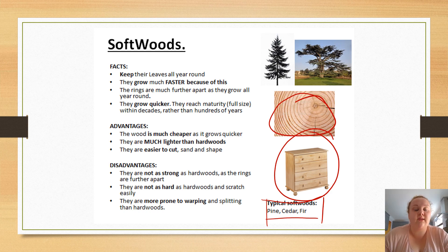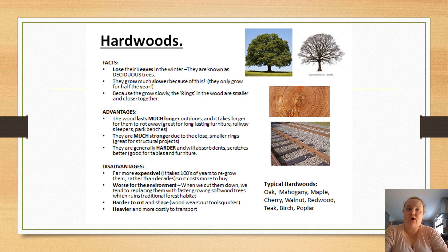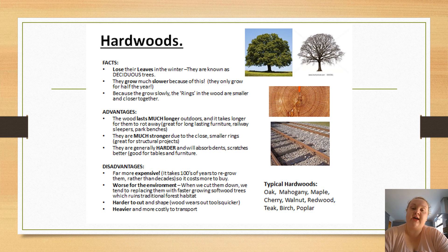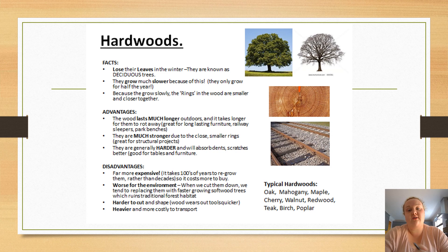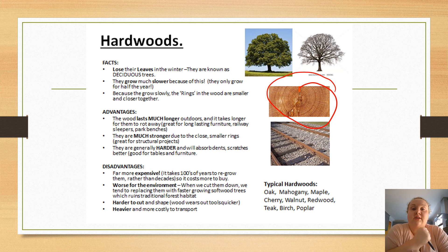Now we're looking at hardwoods. Hardwoods lose their leaves in winter, which means they only grow for part of the year, so they grow much slower. A hardwood could take hundreds of years to reach full size, whereas a softwood only takes around 30 years to reach maturity. Because they grow much slower, the rings inside the wood are closer together, and those closer rings are what makes hardwood stronger and harder.